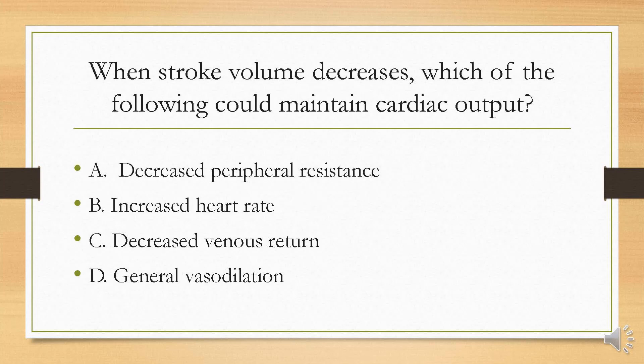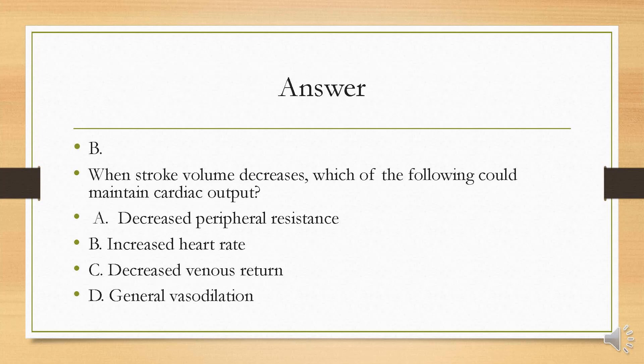When stroke volume decreases, which of the following could maintain cardiac output? Is it A, decreased peripheral resistance; B, increased heart rate; C, decreased venous return; or D, general vasodilation? The answer is B. Remember your formula for cardiac output is stroke volume times heart rate.